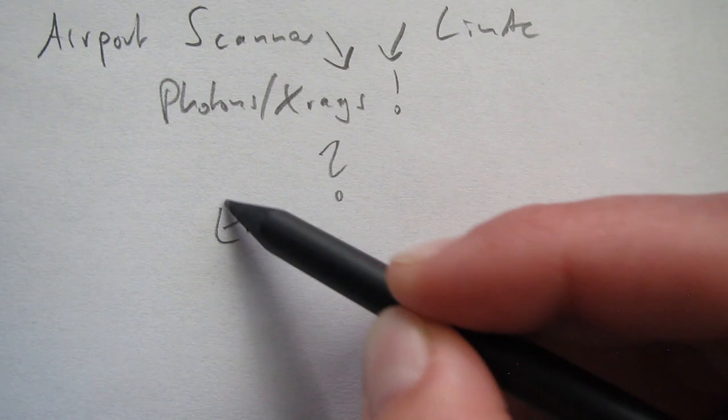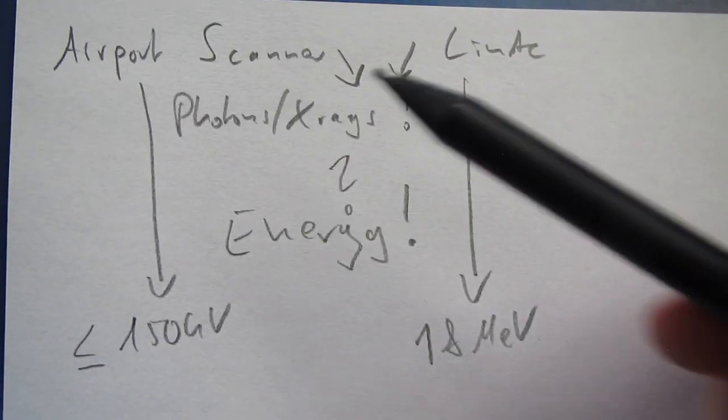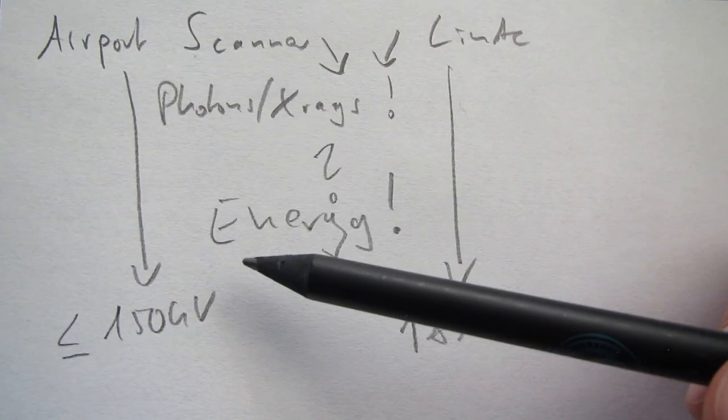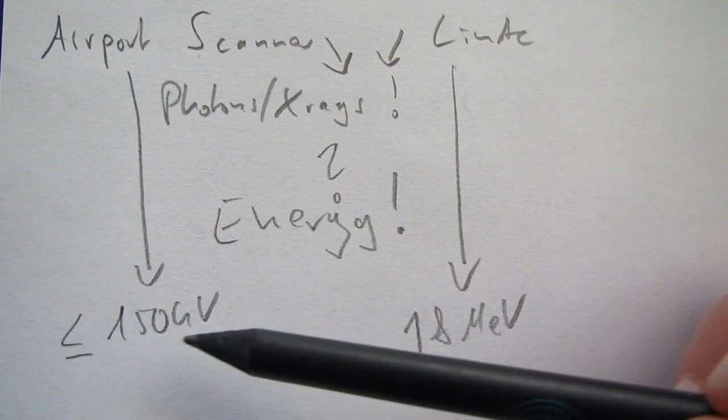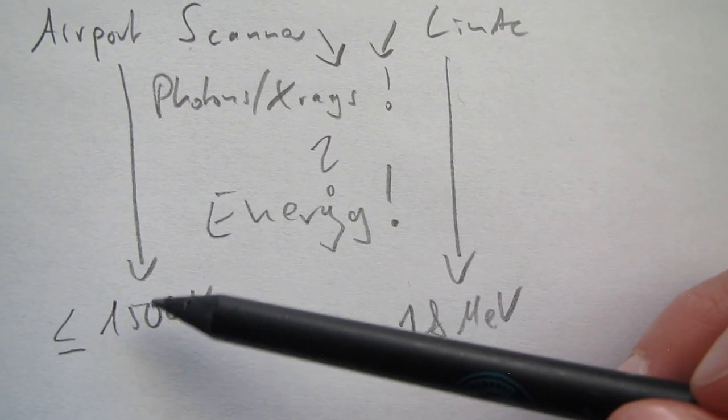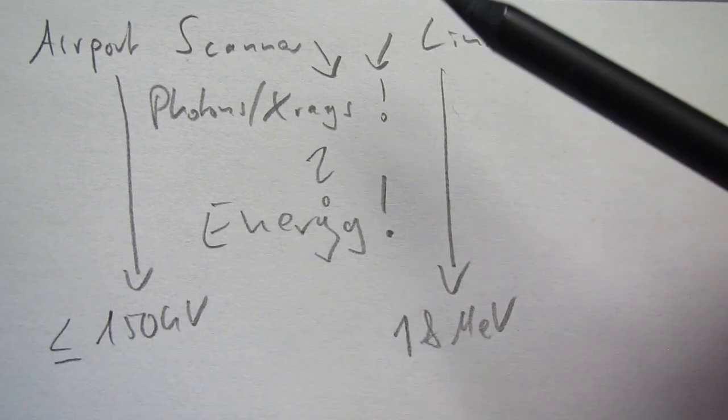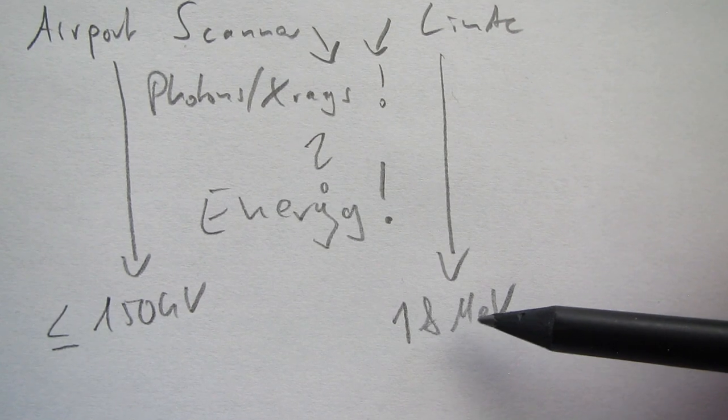The difference is the energy. The energy of photons or X-rays used in a conventional airport scanner can be a maximum of 150 kV, but it is usually much lower than this. But it does not really matter if it is 150 or just 30 kV. We will see why. Well, the linear accelerator beam is very high in energy.